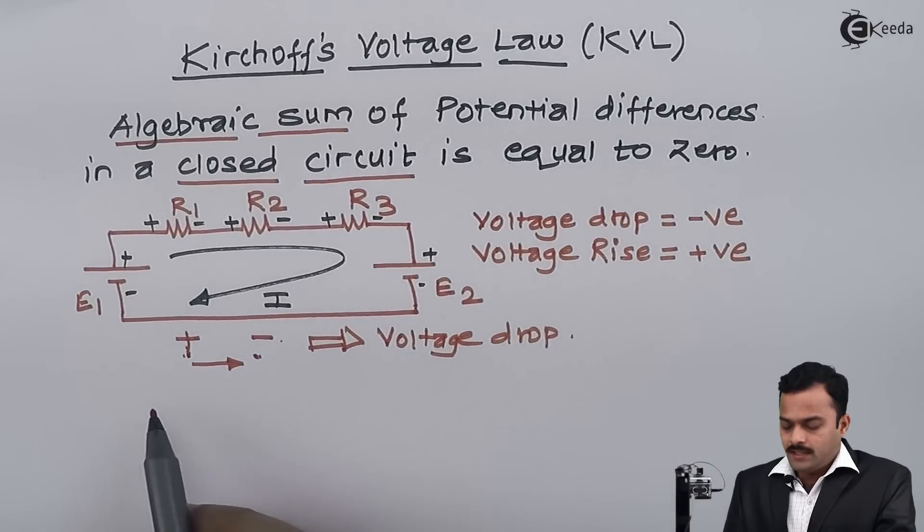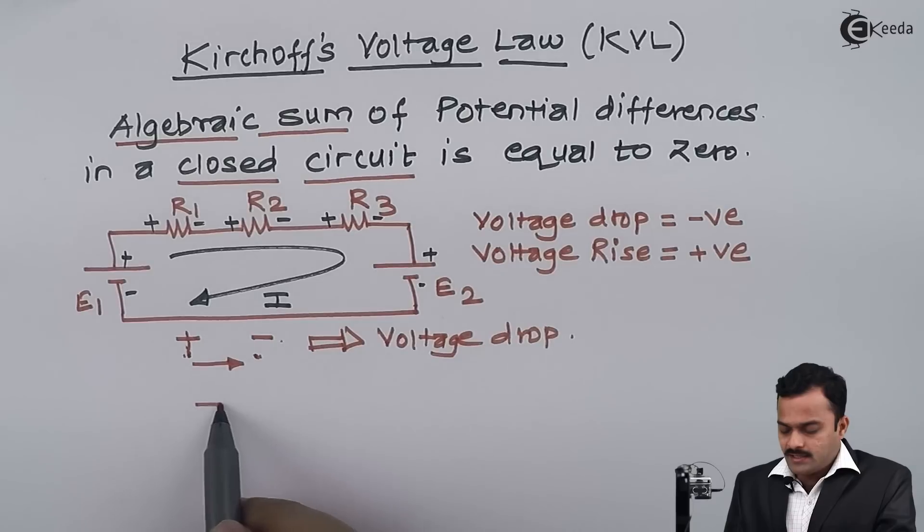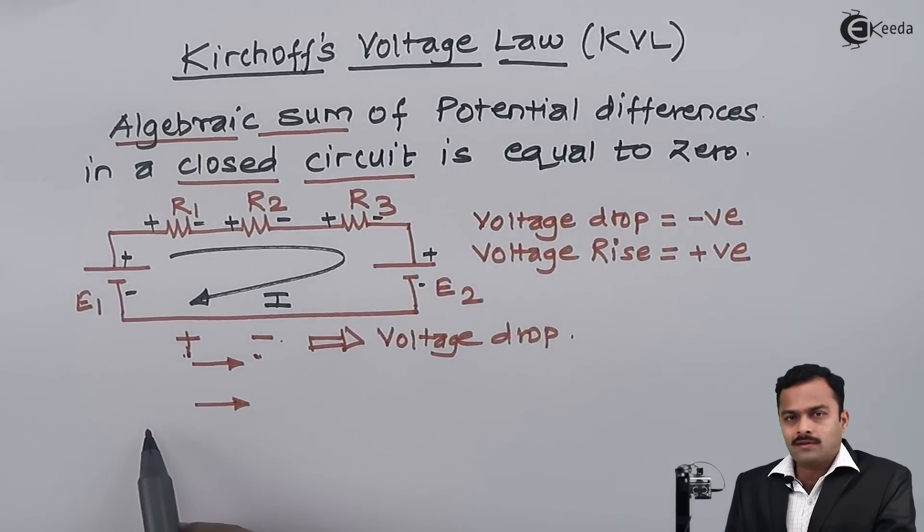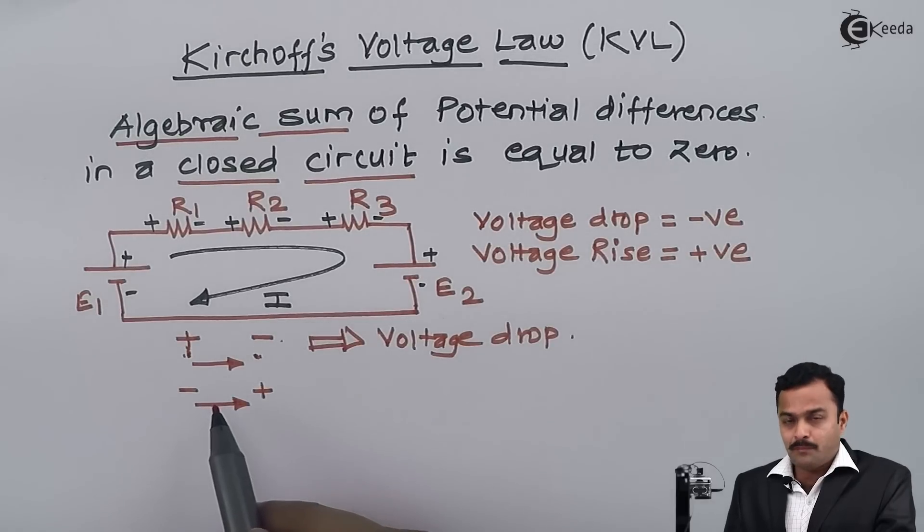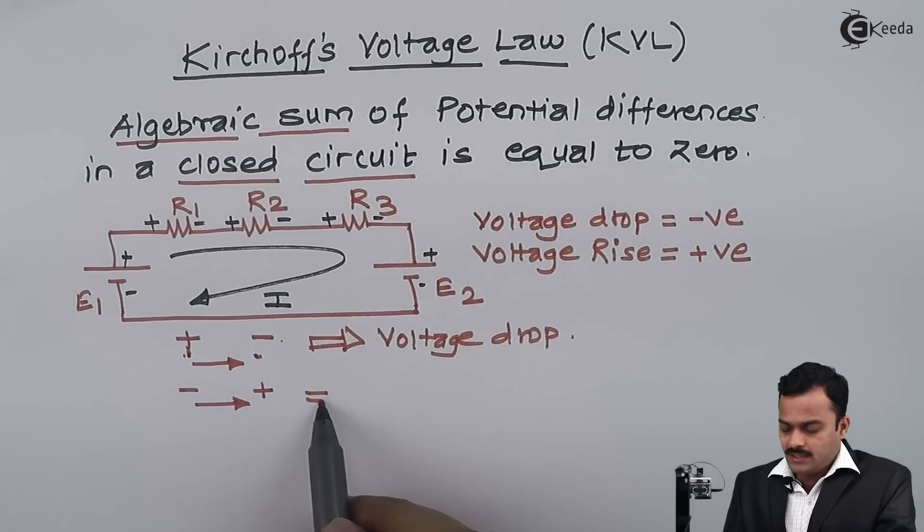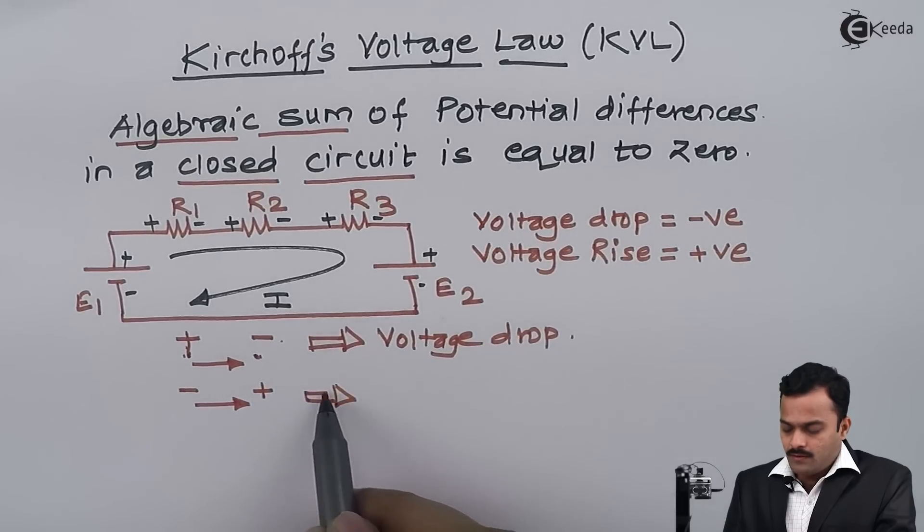Likewise, if in the direction of current or tracing the circuit, I am having an element voltage polarity changing from minus to plus, it could be anything—either a resistance or a battery—I will consider that particular potential as voltage rise.